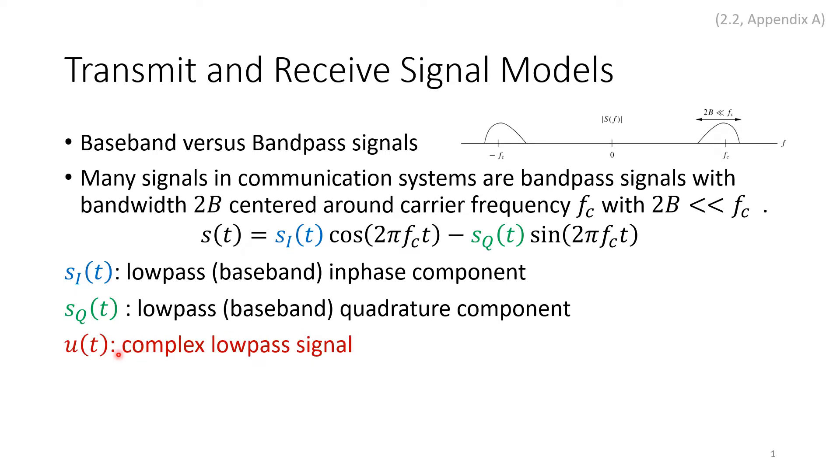u(t) would be the complex lowpass signal. When we modulate a signal and it's in bandpass, it's in fact two signals together because we can think of amplitude and phase. If you recall the QM, one is modulated with cosine and one is modulated with sine.